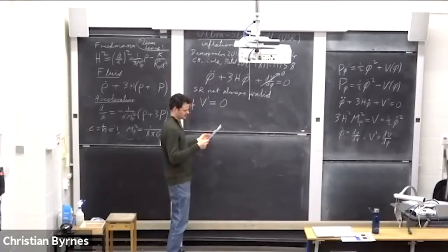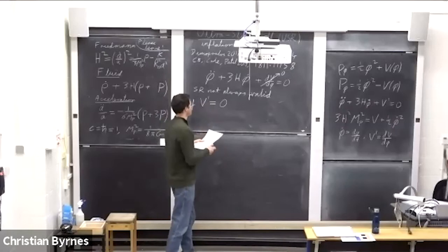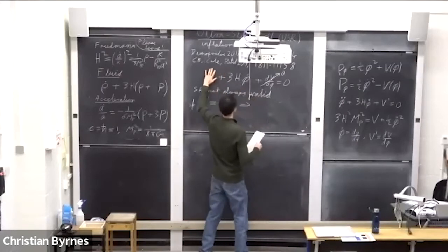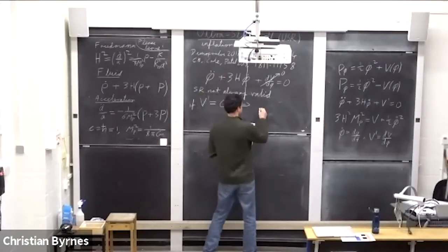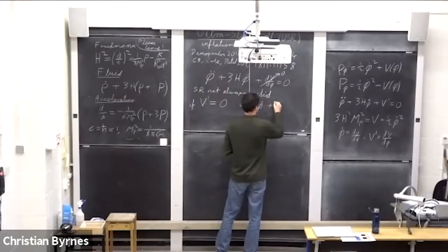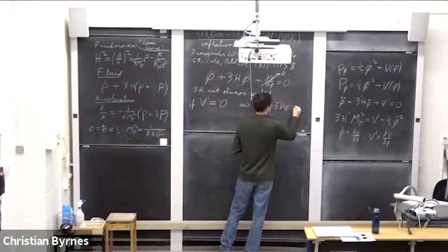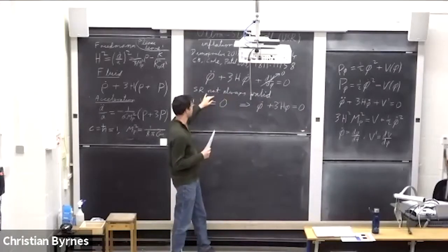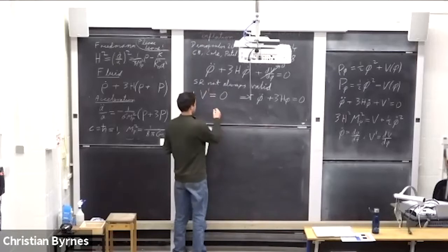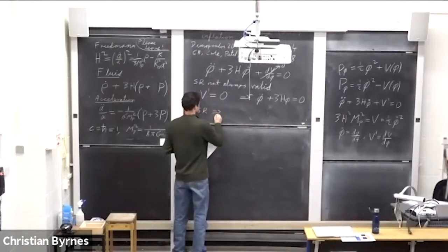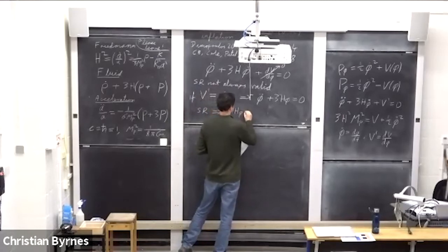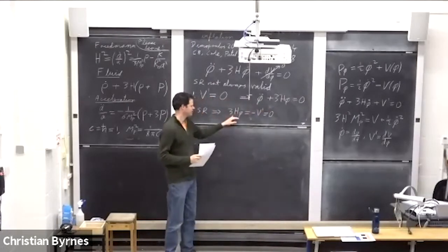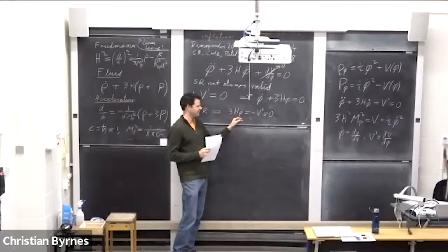If V prime equals zero then we have a new, simpler equation of motion: phi double dot plus 3H phi dot equals zero. In slow roll, 3H phi dot equals minus V prime which equals zero, so slow roll would imply that phi dot equals zero — the inflaton field has stopped.